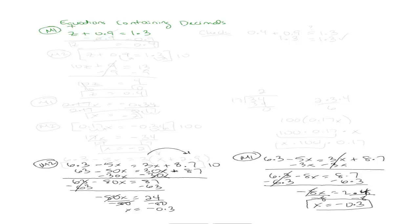So the first method is we're going to work with it just like if it were any other problem, using the addition and multiplication properties of equality. So if I want to isolate z, what do I do here? Subtract 0.9 from both sides, right?